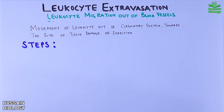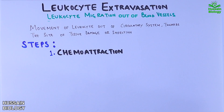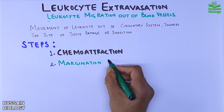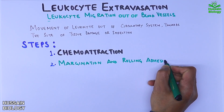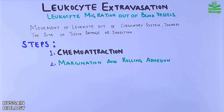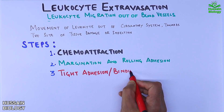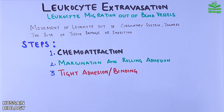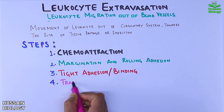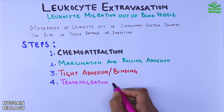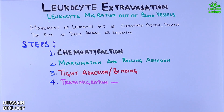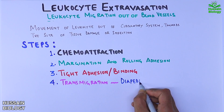The first step is chemoattraction. The second step is margination and rolling adhesion. Then we have the third step, which is tight adhesion and binding. And finally, the last step is the transmigration of leukocytes, which also involves diapedesis.